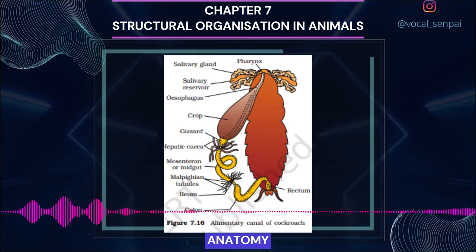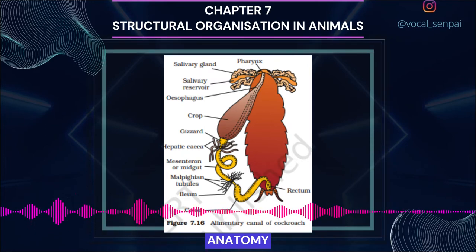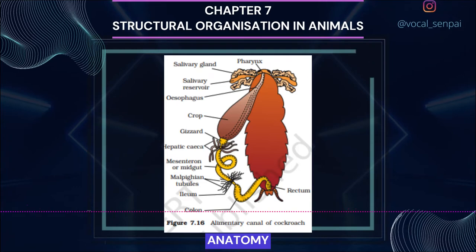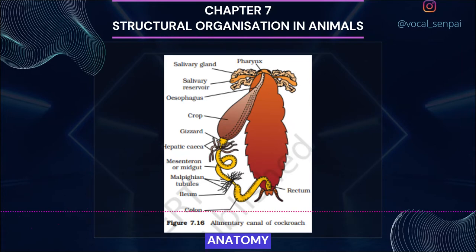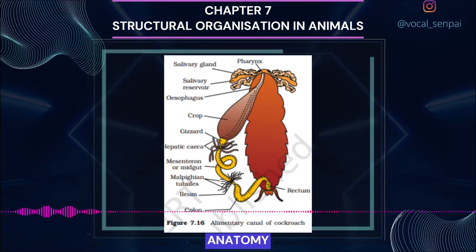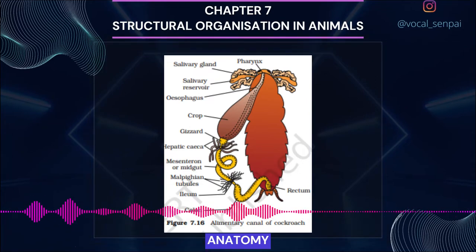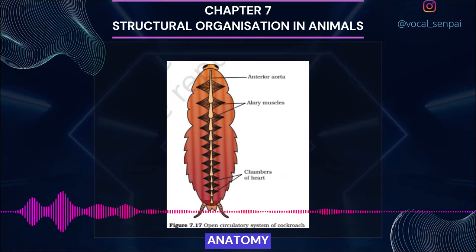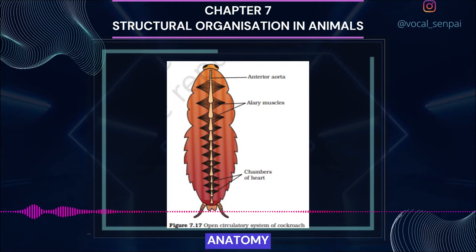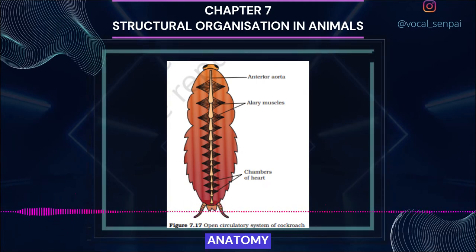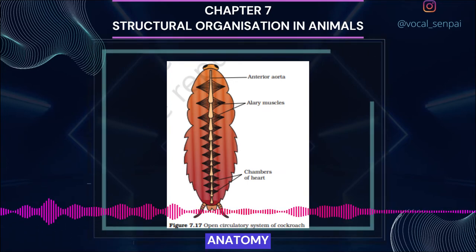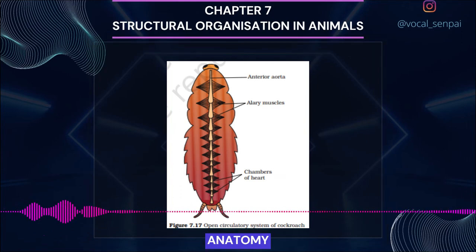The blood vascular system of cockroach is of open type (figure 7.17). Blood vessels are poorly developed and open into spaces called the haemocoel. Visceral organs in the haemocoel are bathed in blood called haemolymph, which is composed of colorless plasma and haemocytes. The heart of the cockroach consists of an elongated muscular tube lying along the mid-dorsal line of thorax and abdomen, differentiated into funnel-shaped chambers with ostia on either side. Blood from sinuses enters the heart through ostia and is pumped anteriorly to the sinuses again. The respiratory system consists of a network of tracheae that open through 10 pairs of small holes called spiracles present on the lateral sides of the body. Thin branching tracheal tubes subdivided into tracheoles carry oxygen from the air to all parts; the opening of spiracles is regulated by sphincters; exchange of gases takes place at the tracheoles by diffusion.